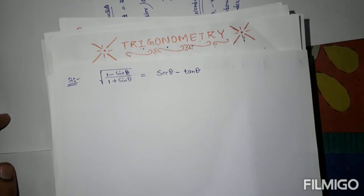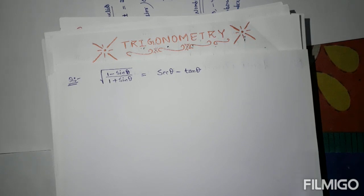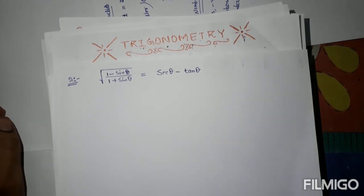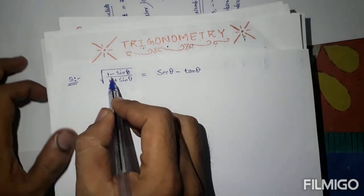Welcome to Maths Online Classes. In the last class we studied some identities of trigonometry and solved some questions based on those identities. In this video we will solve some other example questions based on those identities. The first question is: the square root of (1 minus sine theta) upon the square root of (1 plus sine theta) is equal to sec theta minus tan theta.